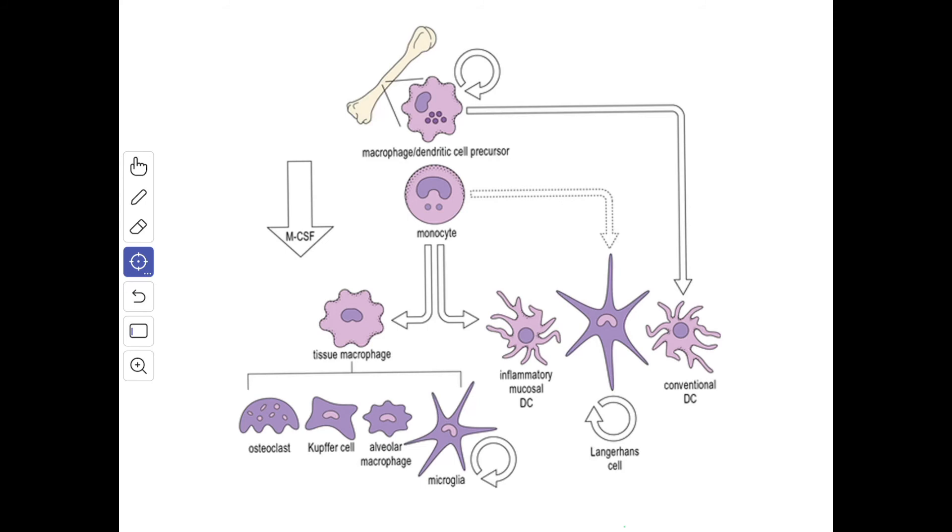All mononuclear phagocytes bear antigens on their surface, that is the class II MHC antigens. The antigens phagocytosed by macrophages are partially digested by lysosomes. Some remnants pass to the cell surface where they form complexes with the MHC antigen. This complex has the ability to stimulate the T lymphocytes.